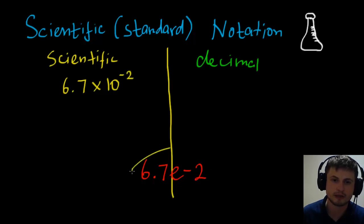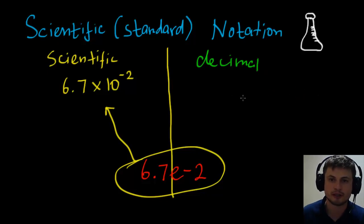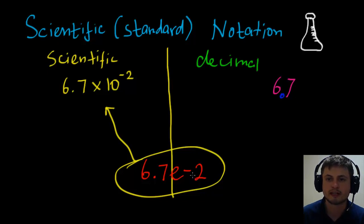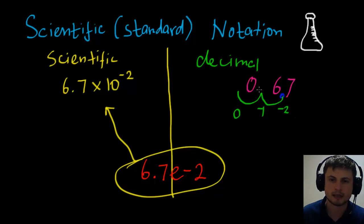So 6.7E-2 and 6.7 times 10 to the power of minus 2 are the same thing. Now decimals are a little bit more challenging. Whenever you have a negative power, it's best to start from the right side because you have a lot of zeros on the left. Rewrite 6.7 and put an imaginary dot where the decimal used to be — now we count down two negative powers: from minus 2 to minus 1, then from minus 1 to 0. We insert a 0 between each step, giving us the decimal answer 0.067.